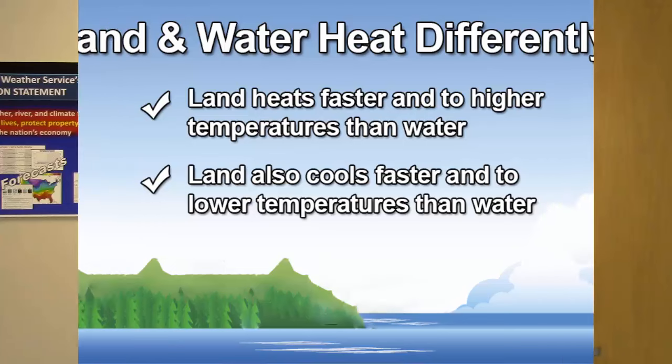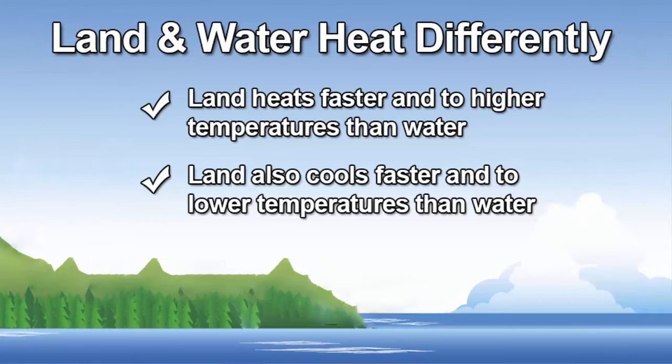To quickly recap: the Sun heats the Earth and the Earth heats the air, but the Earth doesn't heat the same all over. There are changes in latitude due to the curvature of the Earth, and seasonal changes because the Earth revolves around the Sun while tilted on its axis. But there's more — even areas receiving the same amount of solar radiation can heat up differently. We're talking about the differential heating of land and water: land heats up faster to higher temperatures than water does, and consequently cools off faster too.